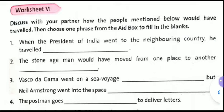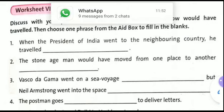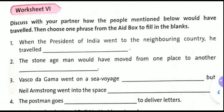Now worksheet six. Discuss with your partner how the people mentioned below would have travelled. Then choose one phrase from the aid box to fill in the blanks. You have to use the phrases given in the aid box. When the president of India went to the neighboring country, he travelled by airplane. This is what you have to fill up in the first gap.